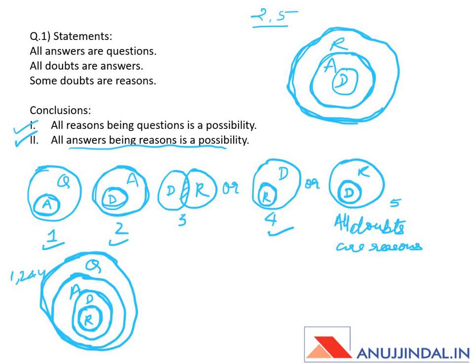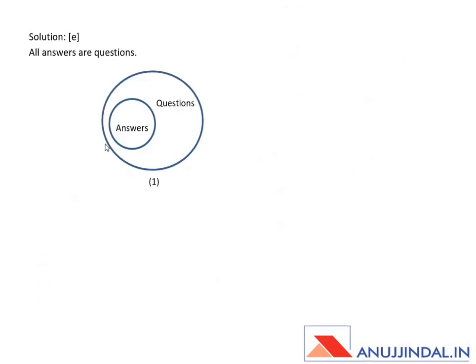Both conclusion one and conclusion two follow. As we read in the directions, when both conclusions follow we mark option E as the answer. So option E is the answer.